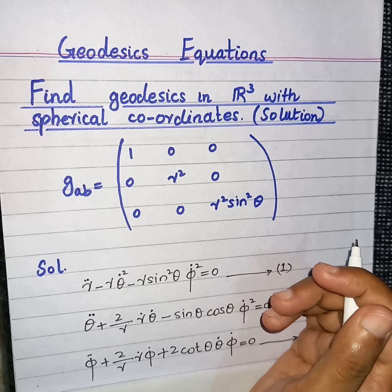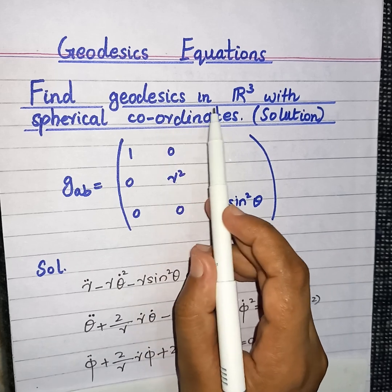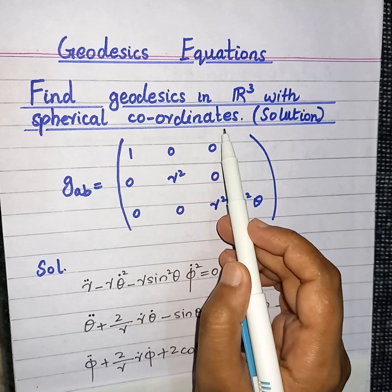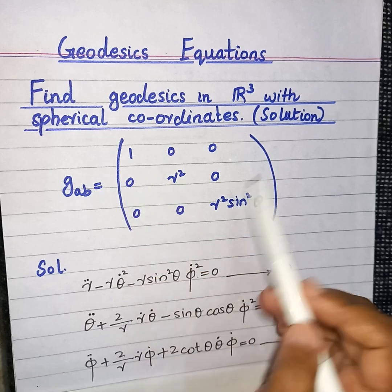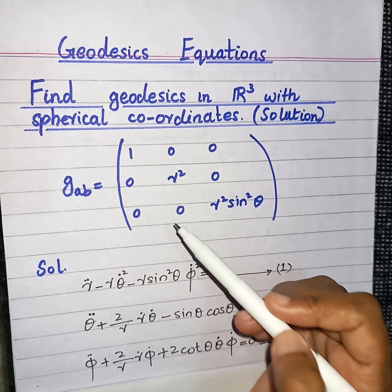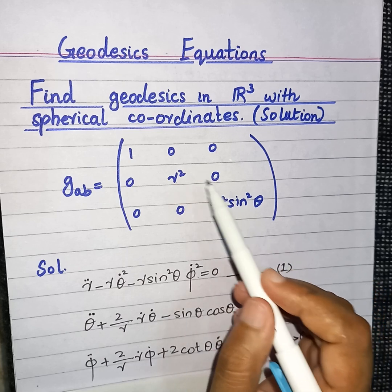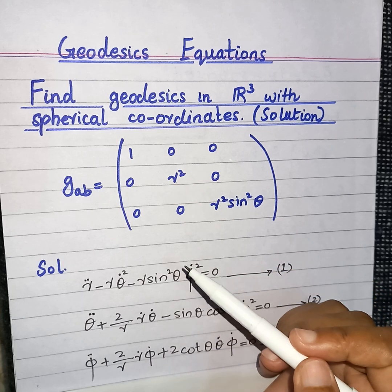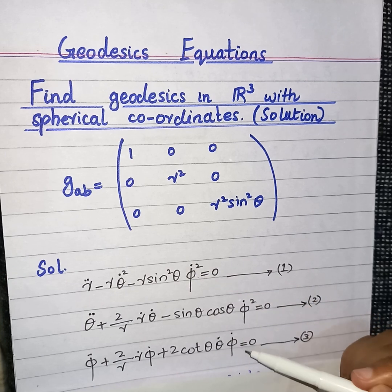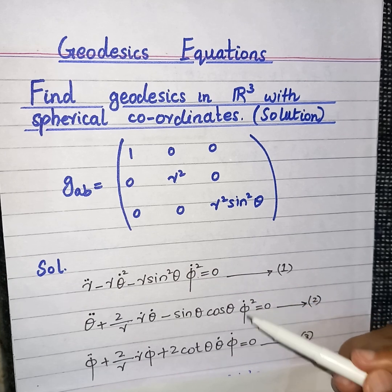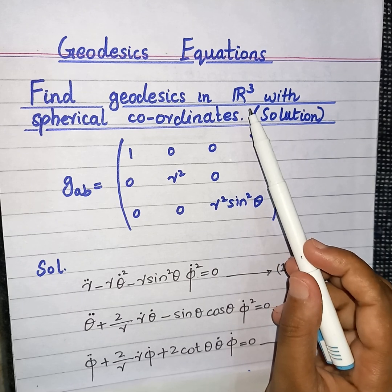Hello everyone. In today's lecture we will discuss a problem related to finding the solution of the geodesics equation in R³ with spherical coordinates, and its metric is given by g_AB as shown. In the previous lecture I discussed how we can find the geodesics equation. When we use the formula of the geodesic equation, we get three equations because we are talking about R³, a three-dimensional manifold.